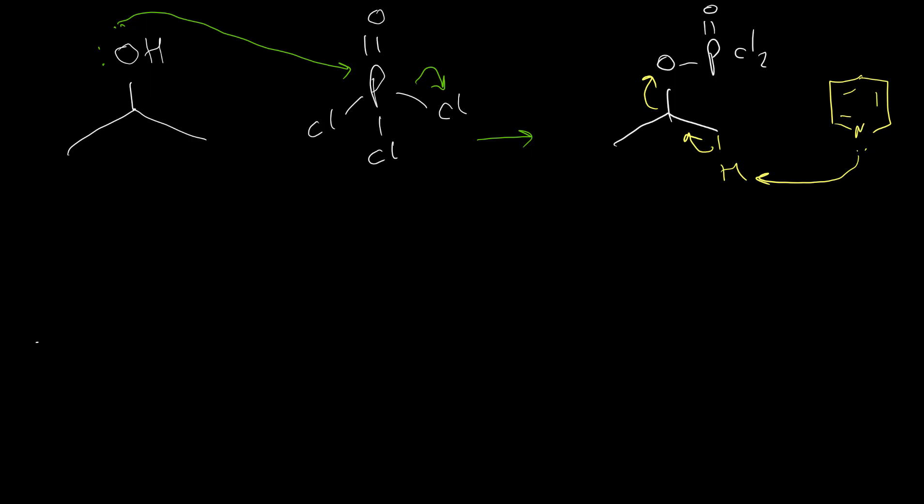Pyridine is a base and it can attack and take one hydrogen. Simultaneously, these electrons come here and expel this good leaving group. As a result, we have an alkene and the mechanism is E2. So there is no formation of carbocation in this reaction. Because we don't have any carbocation, prediction of the product is easier and we don't need to write the mechanism every time. We can easily write the products for the reaction.